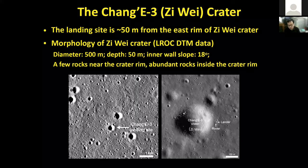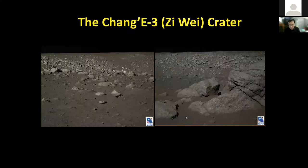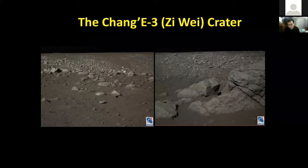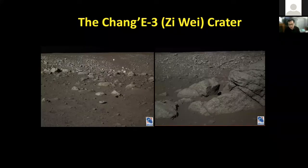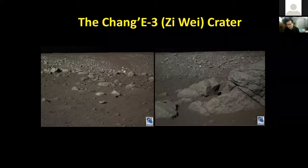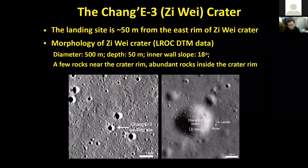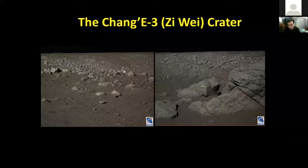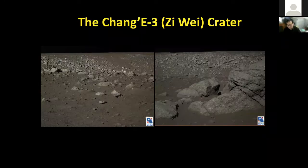There are abundant rocks inside the crater rims. These two figures show optical images obtained by the panoramic cameras on the Chang'e 3 rover. We can see that inside the impact crater rim there are so many rocks, and the size of these rocks is about tens of centimeters. Now we know the morphology of Zui crater — its diameter, depth, surface rocks, and inner wall slope — so we can estimate its age.